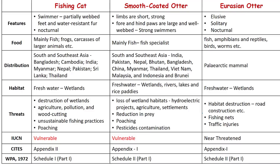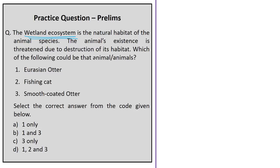To answer this question you need to know the distribution of these species. The fishing cat is spread across South and Southeast Asia — from Pakistan in the west to Cambodia in the east, from the Himalayan foothills to Sri Lanka. Its distribution is patchy due to its strong association with wetlands. In India, fishing cats are mainly found in the mangrove forests of the Sundarbans, along the Ganga and Brahmaputra river valleys, and in the Western Ghats. A major threat is destruction of wetlands, so the answer should contain fishing cat — making option D (1, 2, and 3) the correct answer.